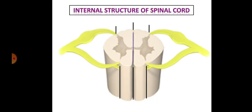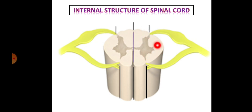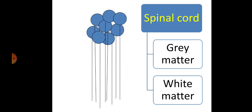If you have taken the cross section of the spinal cord, the interior basically consists of two parts. One is the grey colour H-shaped structure, that is called grey matter, and that is surrounded by the white matter. It means grey matter is placed in the centre and white matter is placed in the periphery. So, from the cross section you get two structures: grey matter and white matter.